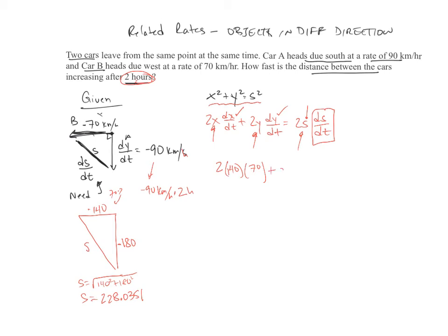So let's put in the 2. Over here, let's put in our Y. Our Y is going to be 180. Let's put in the DY/DT, which is 90. So these are negatives and these are negatives. Again, I told you we can leave that out because we know that the negatives will reduce each other out.